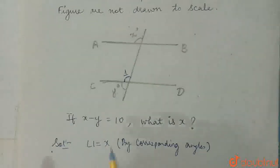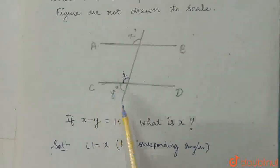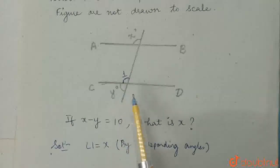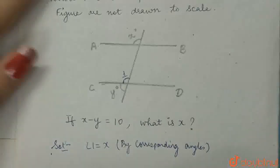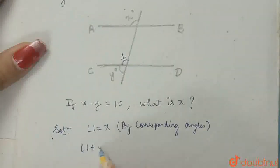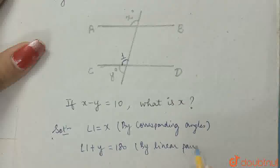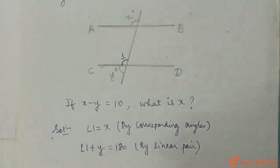We know that the adjacent angles on a straight line, the sum of adjacent angles on a straight line is 180. This transversal is a straight line and this y and angle 1 are the adjacent angles. So the sum of these two angles, angle 1 plus y is 180 by linear pair, because they are the angles on a straight line and straight line angle is 180.